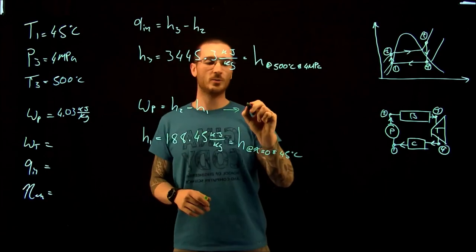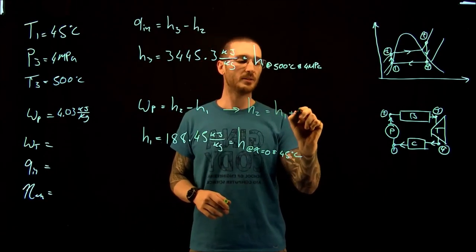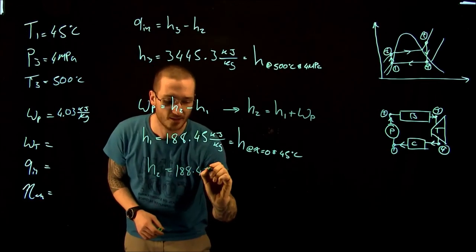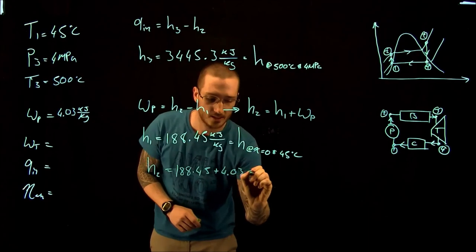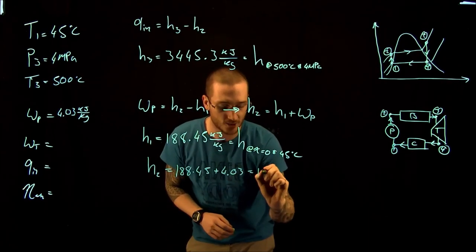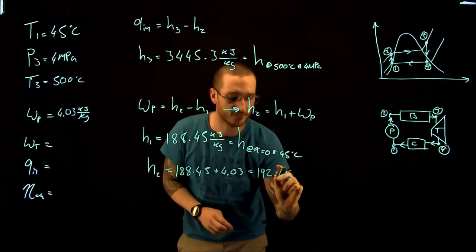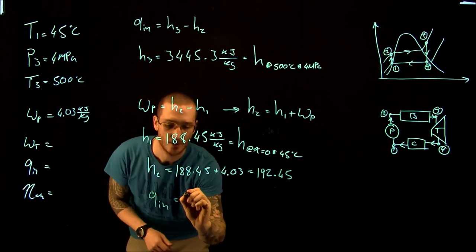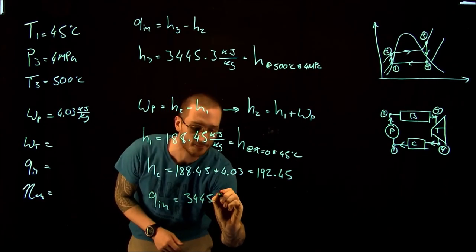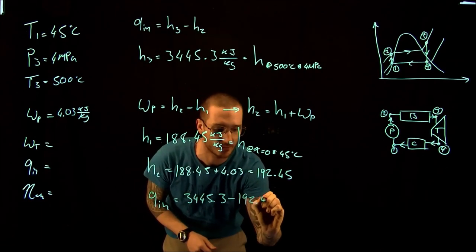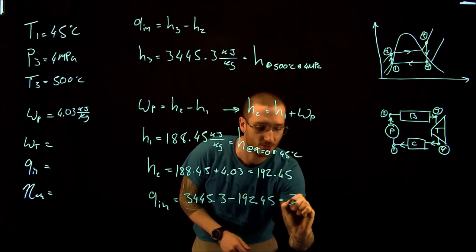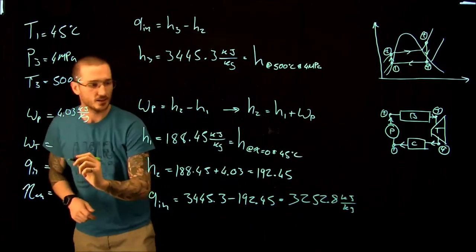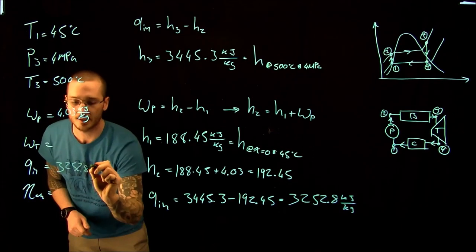Rearranging, the enthalpy at point two equals the enthalpy at point one plus the work of the pump: 188.45 + 4.03 = 192.45 kJ/kg. So Q_in = 3,445.3 − 192.45 = 3,252.8 kJ/kg.